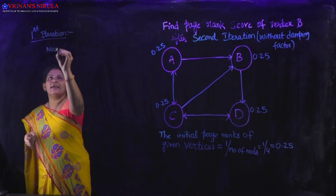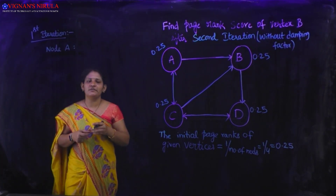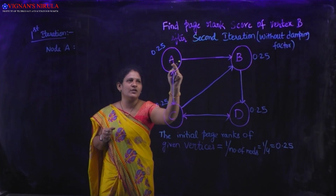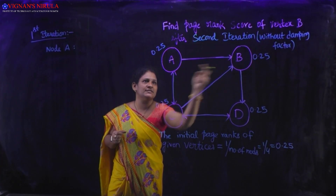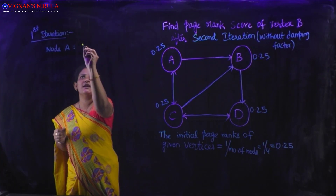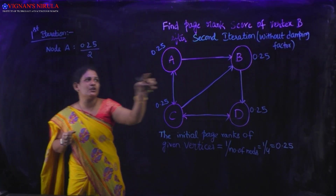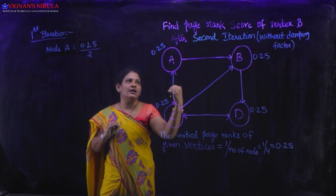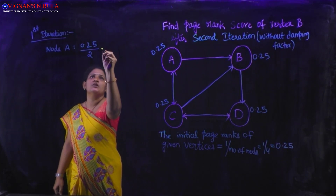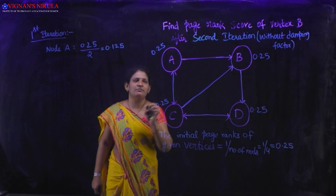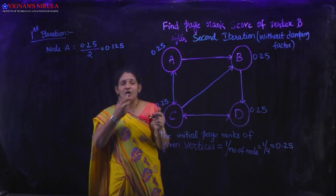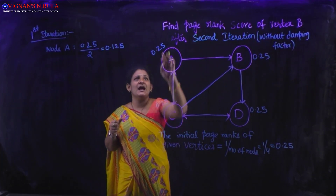In the first iteration, for vertex A: node A has two outgoing links — one to B and one to C. The initial page rank of A is 0.25, divided by 2 (because there are two outgoing links), giving 0.125. This means A shares its page rank equally — giving 0.125 to vertex B and 0.125 to vertex C. After distributing, A's own value becomes zero.